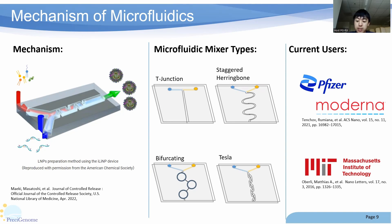Even now, large companies such as Pfizer and Moderna are using microfluidics technology to manufacture and develop their mRNA vaccines. Microfluidics are not only limited to large-scale use and are also being used at the smaller scale for research and development, with studies coming from universities including MIT. This also expands beyond DNA and RNA vaccines seen with Pfizer and Moderna to more gene editing approaches as discussed earlier.